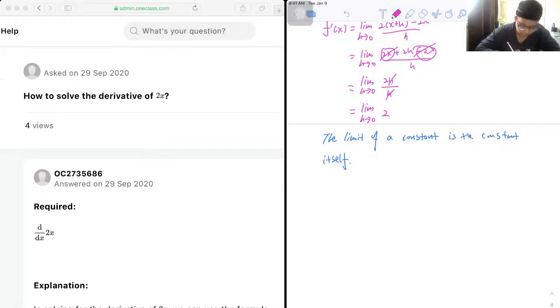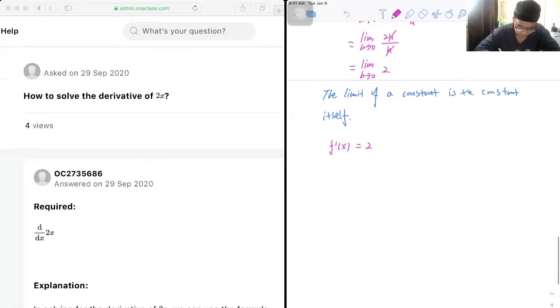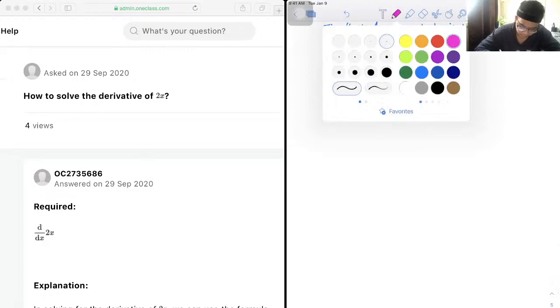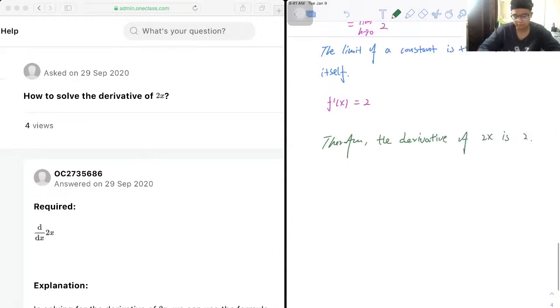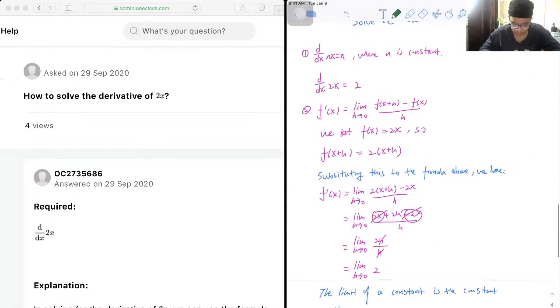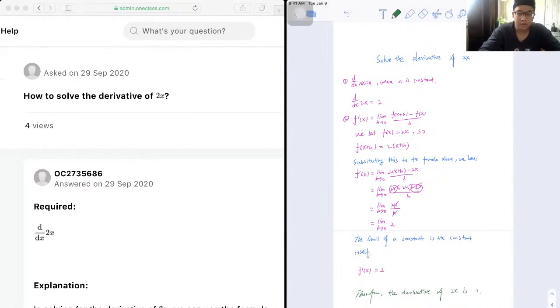Therefore, the derivative of f(x) is equal to 2. So now we can write our conclusion. Therefore, the derivative of 2x is 2. So that's all we have for this question.